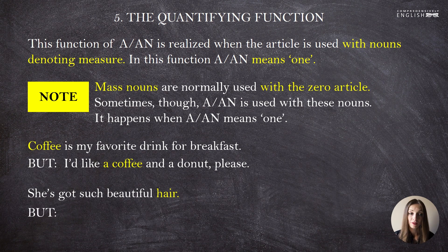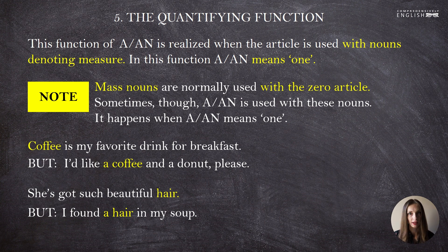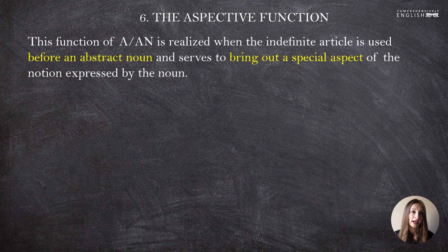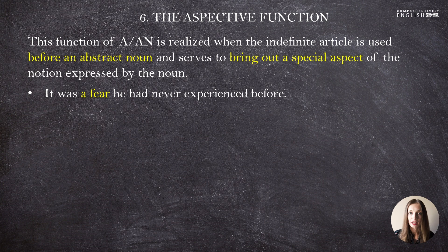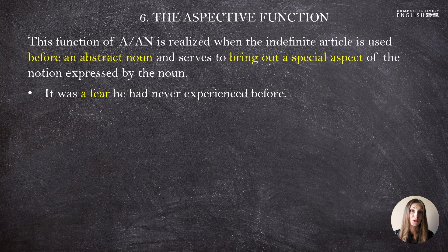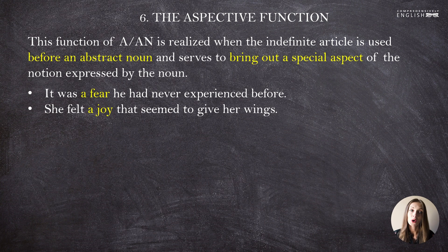'She's got such beautiful hair, but I found a hair in my soup.' Moving to the last function: the aspective function — one of the trickiest. This function is realized when the indefinite article is used before an abstract noun and serves to bring out a special aspect of the notion expressed by that noun. You might ask: how do I know if I should use 'a' in front of an abstract noun?